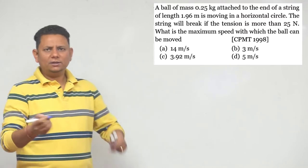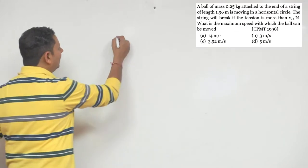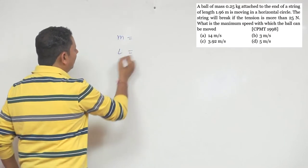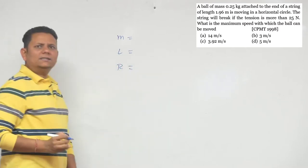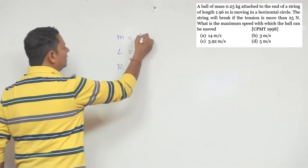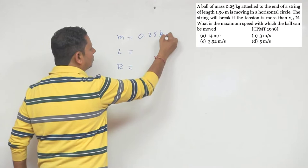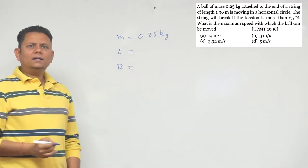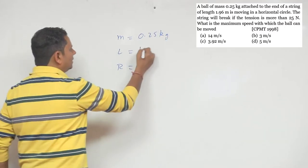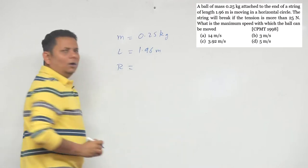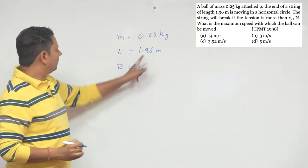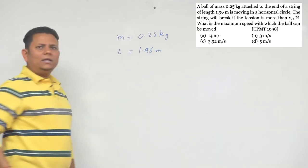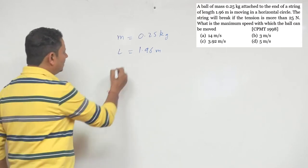Let's write down the given data. Mass is 0.25 kg, which can also be written as 1/4. Length is given as 1.96 meter, and this length becomes your radius. Maximum tension value is given as 25 newton.